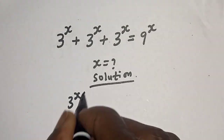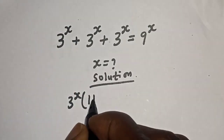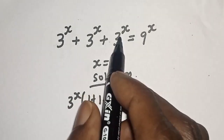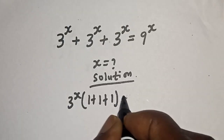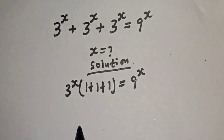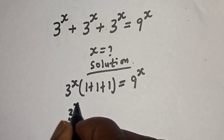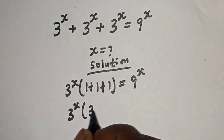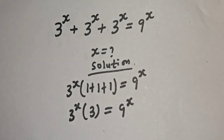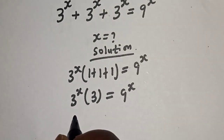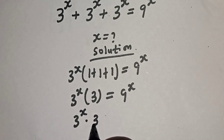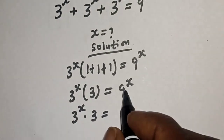Solution: from here, 3 raised to power s is common — let's bring it out. 3 raised to power s, bracket 1 plus 1 plus 1, is equal to 9 raised to power s. And here we have 3 raised to power s multiplied by 3 is equal to 9 raised to power s.